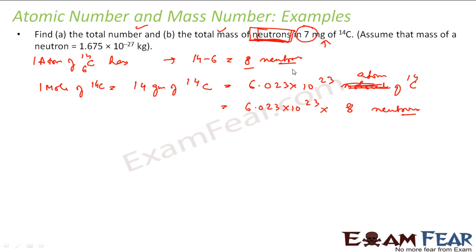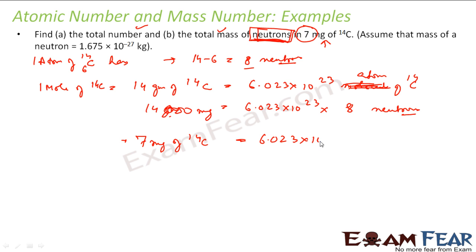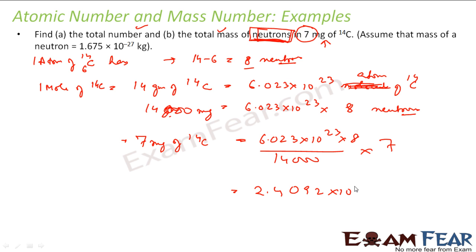We are looking for 7 milligrams, but we have the value for 14 grams. Converting: 14 grams = 14,000 milligrams. So 7 milligrams will have: (6.023×10²³ × 8 ÷ 14,000) × 7 = 2.409×10²¹ neutrons in 7 milligrams of Carbon-14.